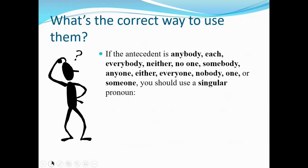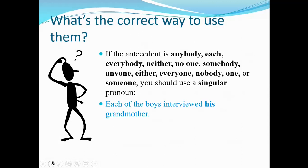Another thing to remember: if the antecedent is 'anybody,' 'each,' 'everybody,' 'neither,' 'no one,' 'somebody,' 'anyone,' 'either,' 'everyone,' 'nobody,' 'one,' or 'someone,' you should use a singular pronoun. Some people think 'everybody' is plural — it's not. You wouldn't say 'everybody are coming over.' You'd say 'everybody is coming over.' Each of the boys interviewed his grandmother, because each boy has a separate grandmother. That's how that sentence changes just because of the pronoun.